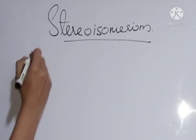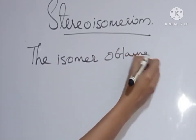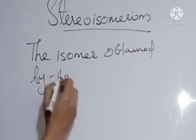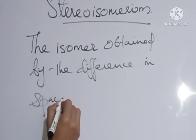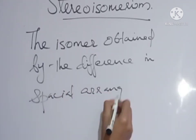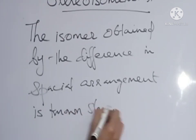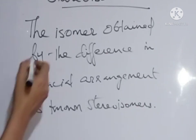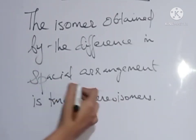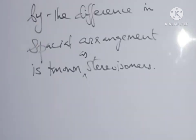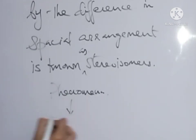Stereo isomerism: the isomers obtained by the difference in spatial arrangement is known as stereoisomers. And this phenomenon is known as stereoisomerism.